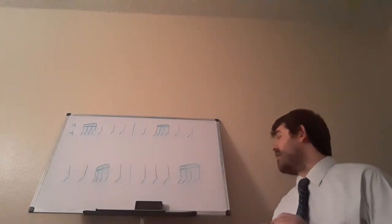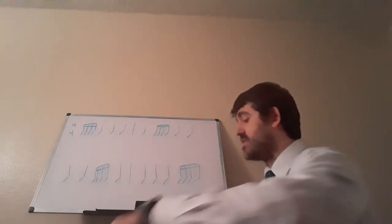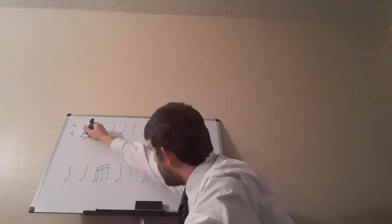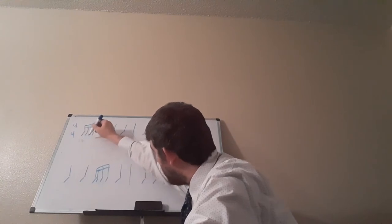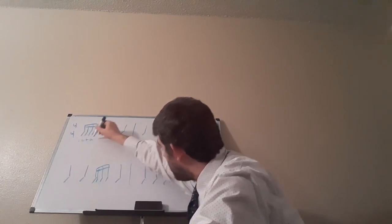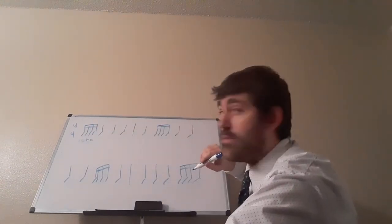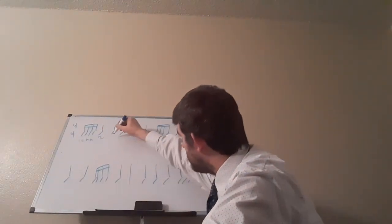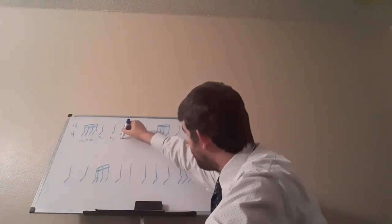So let's figure out how to count this. Measure one has four sixteenth notes at the beginning, so that's one, E, and A. And then the rest of the quarter notes fall on beats two, three, and four.